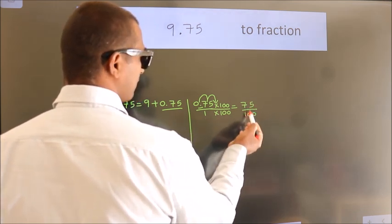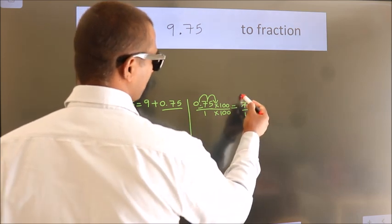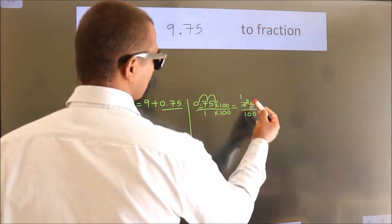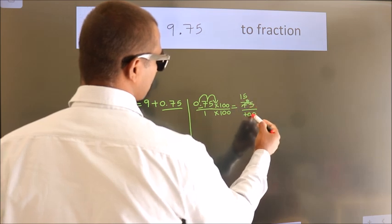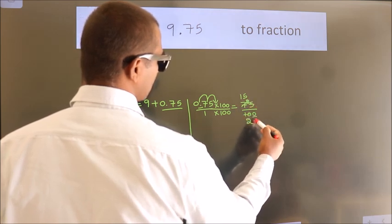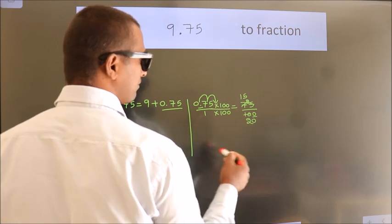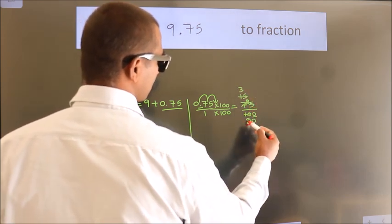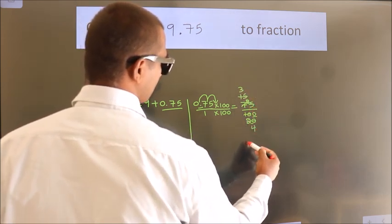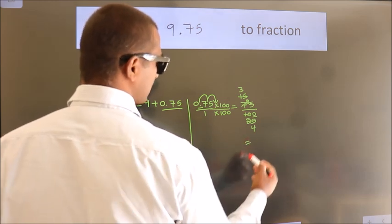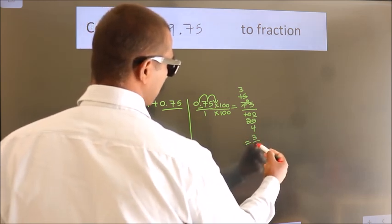Now cancel with 5. 5 ones, 5 fives, 5 twos, this 0 as it is down. Cancel with 5 again. 5 threes, 5 fours. So the fraction we got is 3 by 4.